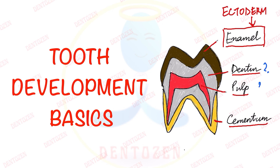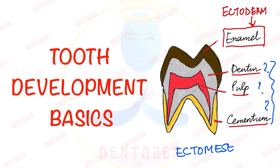Then what about dentine, pulp, and cementum? They form from another layer which is known as ectomesenchyme — another important viva question. So remember: dentine, pulp, and cementum form from ectomesenchyme, and enamel forms from ectoderm.